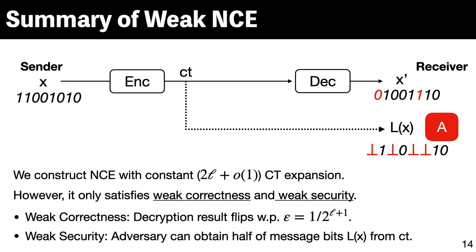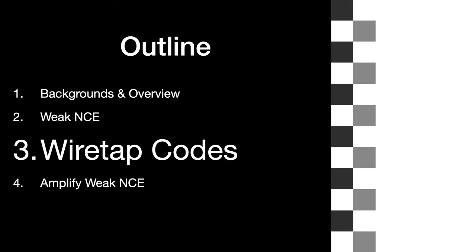Let me summarize the previous slide. We construct an NCE scheme with constant ciphertext expansion. However, it only satisfies weak correctness and weak security. Weak correctness says that each bit of the decryption result flips with probability epsilon. Weak security says that the adversary can obtain half of the message bits from the ciphertext. Here, the information obtained by the adversary is denoted by L. Next, we introduce a tool to amplify weak NCE, that is, wiretap codes.